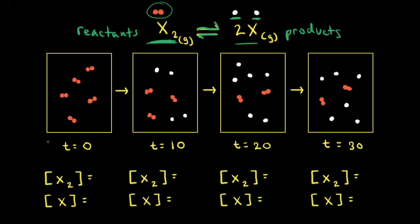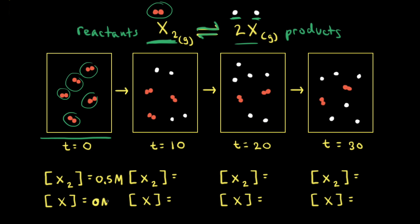Let's say that we start our reaction with only reactants, so only X2 is present in the first container — five particles of X2. If every particle represents 0.1 moles, since we have five particles of X2, we have 0.5 moles of X2. In a one liter container, 0.5 divided by one equals 0.5 molar. So the initial concentration of X2 is 0.5 molar. Since we don't have any X, the initial concentration of X would be 0 molar.